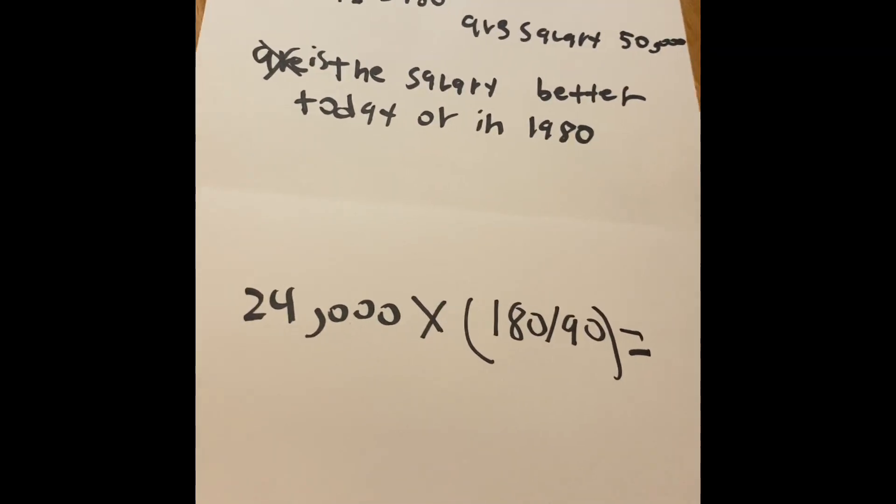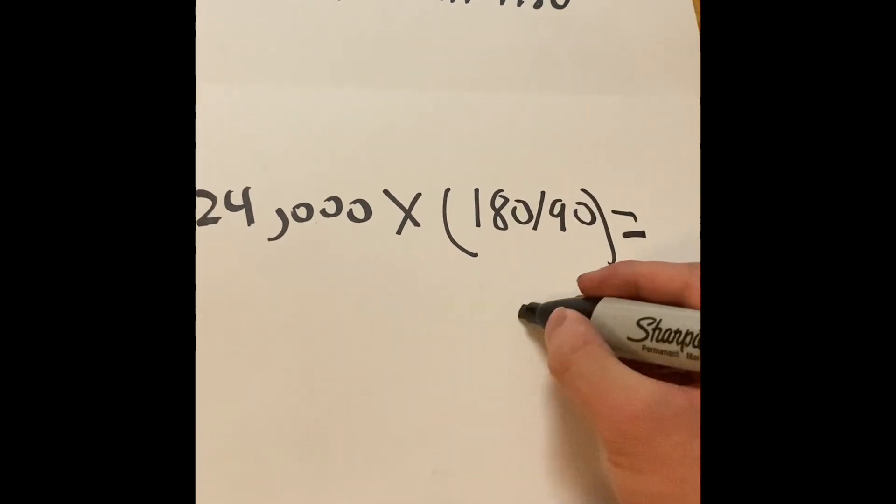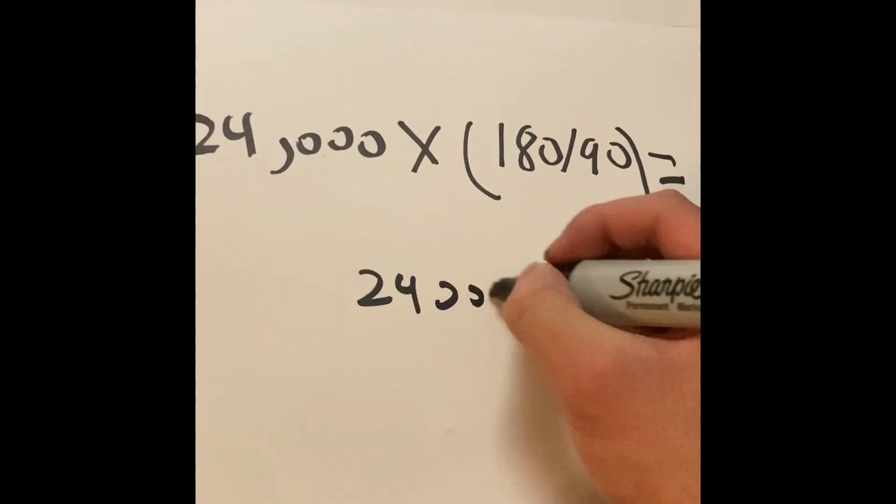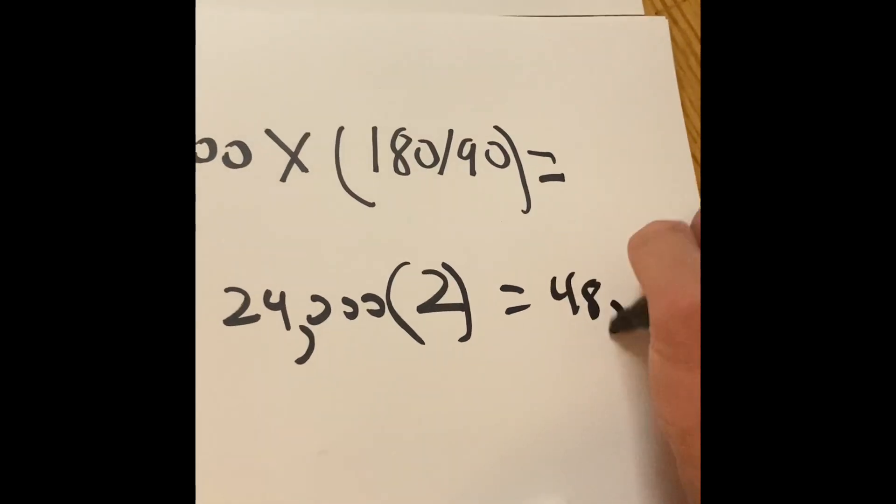So when you do the math, when you do this divided by that, you'll get 2. So $24,000 multiplied by 2 equals $48,000.